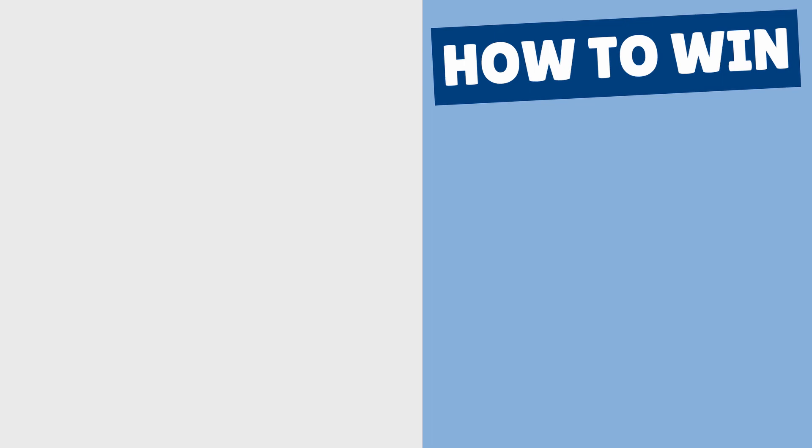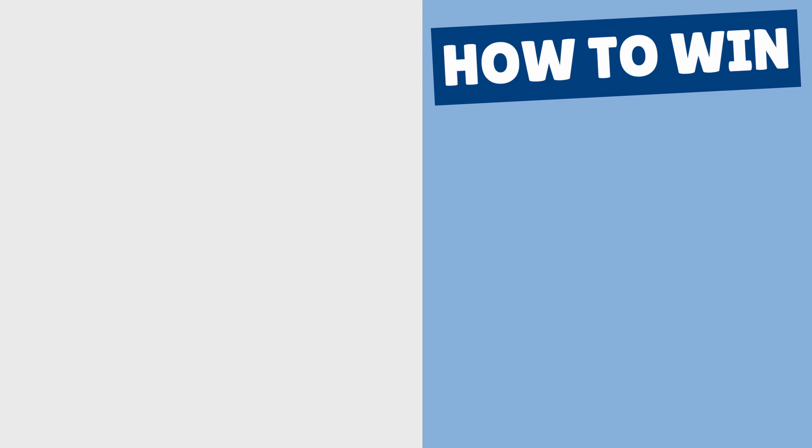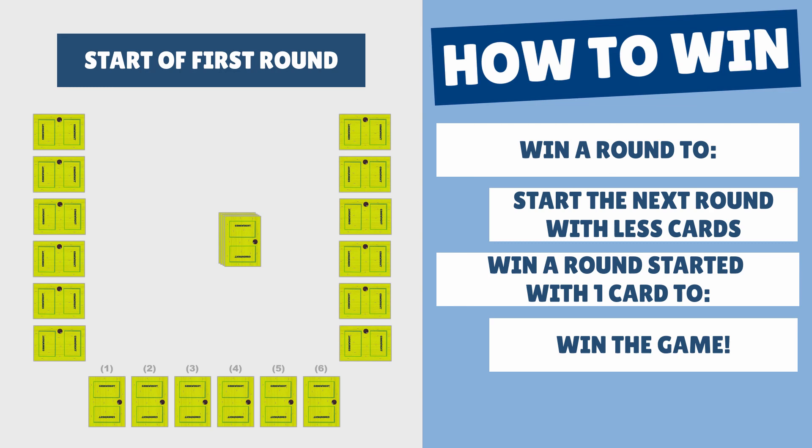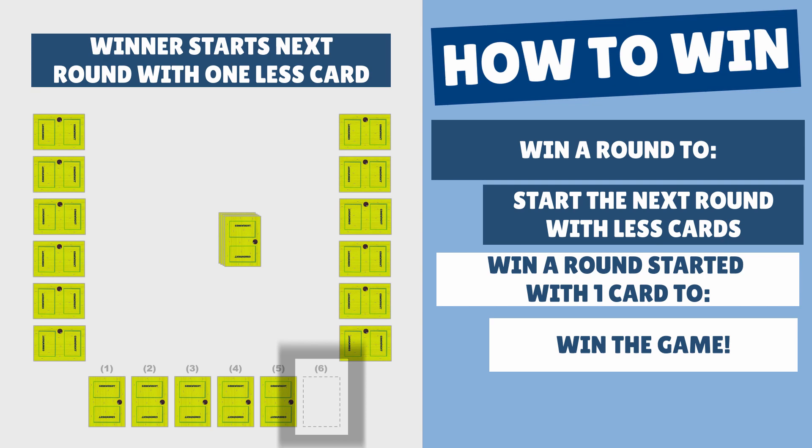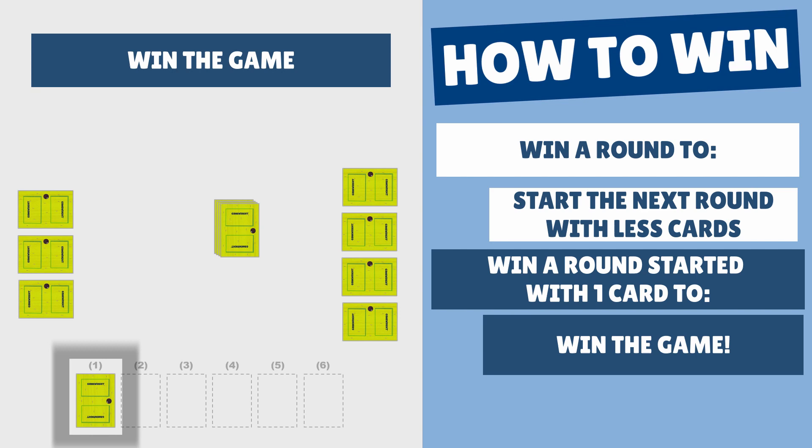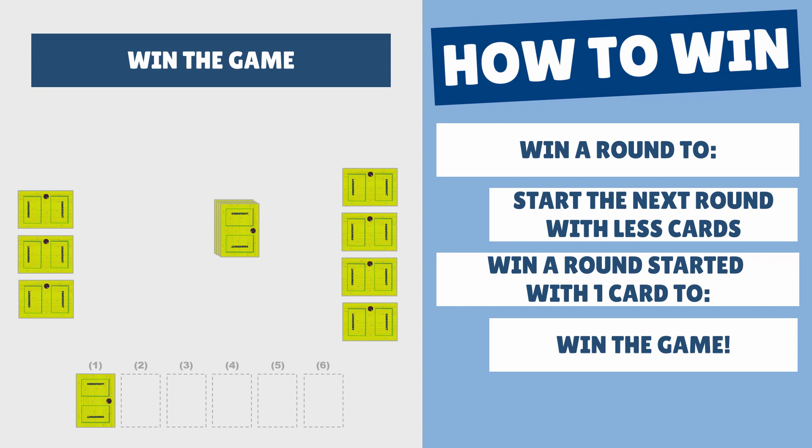Too Many Monkeys is played in multiple rounds. At the start of the first round, all players will have six cards in front of them. But each time a player wins a round, they get to start the next round with one less card. To win the whole game, a player needs to win a round if they start with only one card. Just know that using these official rules, games can actually take a while to play. But we have some tips at the end that will make the game quicker.